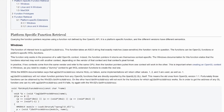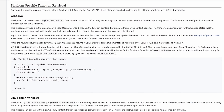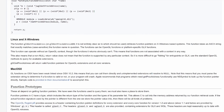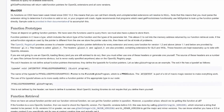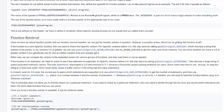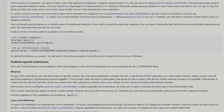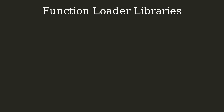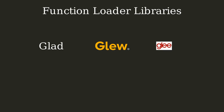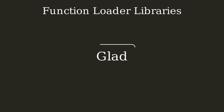This all sounds pretty complicated, and you can do it manually, but there's an easier way. Instead of manually writing code to find all the function pointers for OpenGL, we can just use a library. There are a few different choices: Glad, Glew, Glader, Glee, and more. I'll be using Glad for this tutorial series, and I recommend it because it's simple to use and most of GLFW's documentation assumes you'll be using this library.